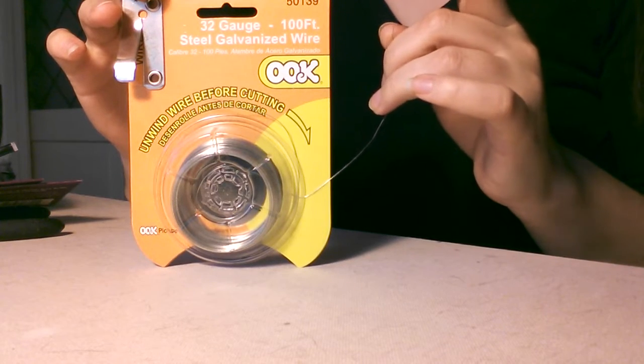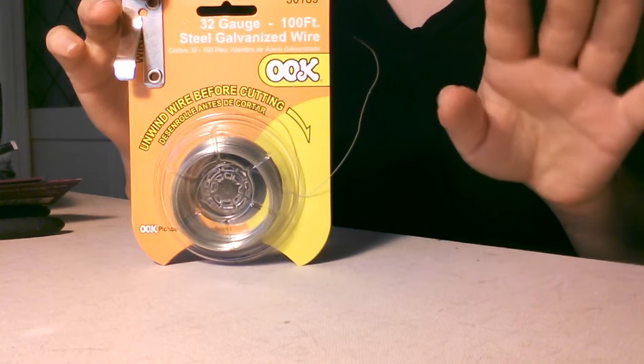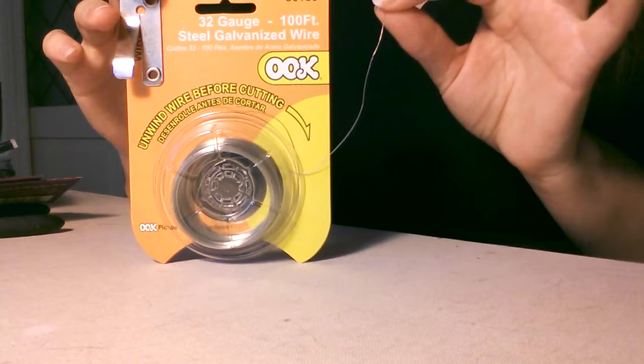Thicker wire, when you use galvanized steel, it's very hard to work with, which is why I recommend aluminum. Copper works too. But for the skinny wire, you want galvanized steel.